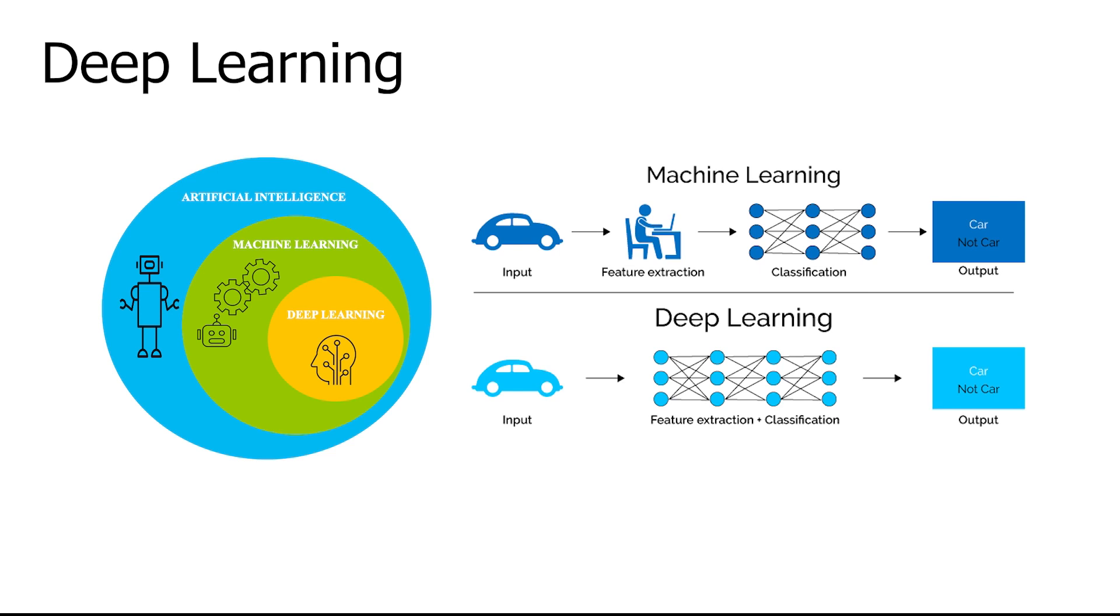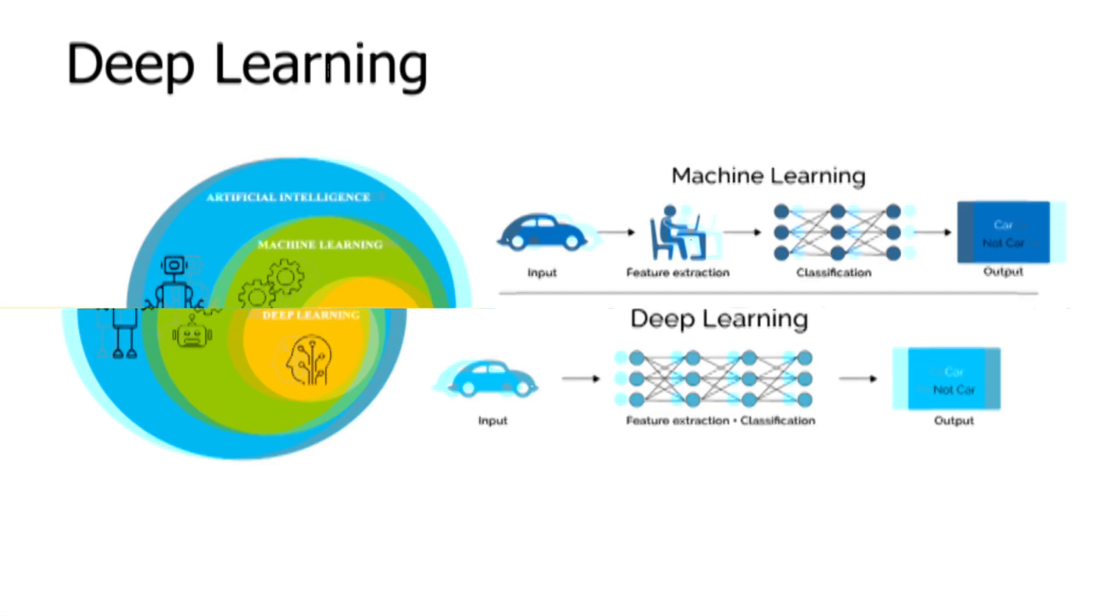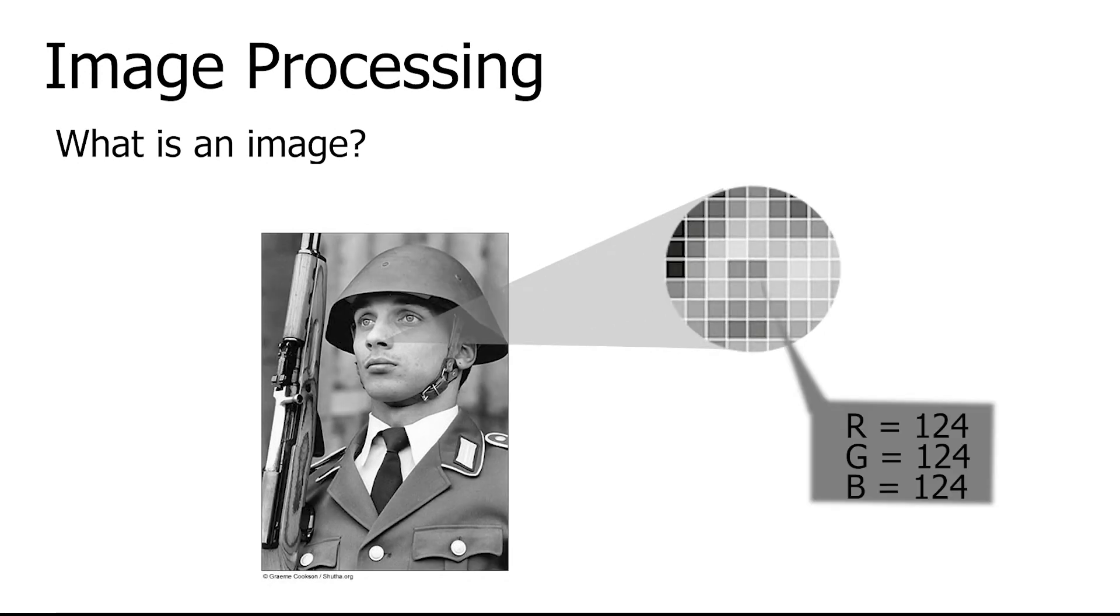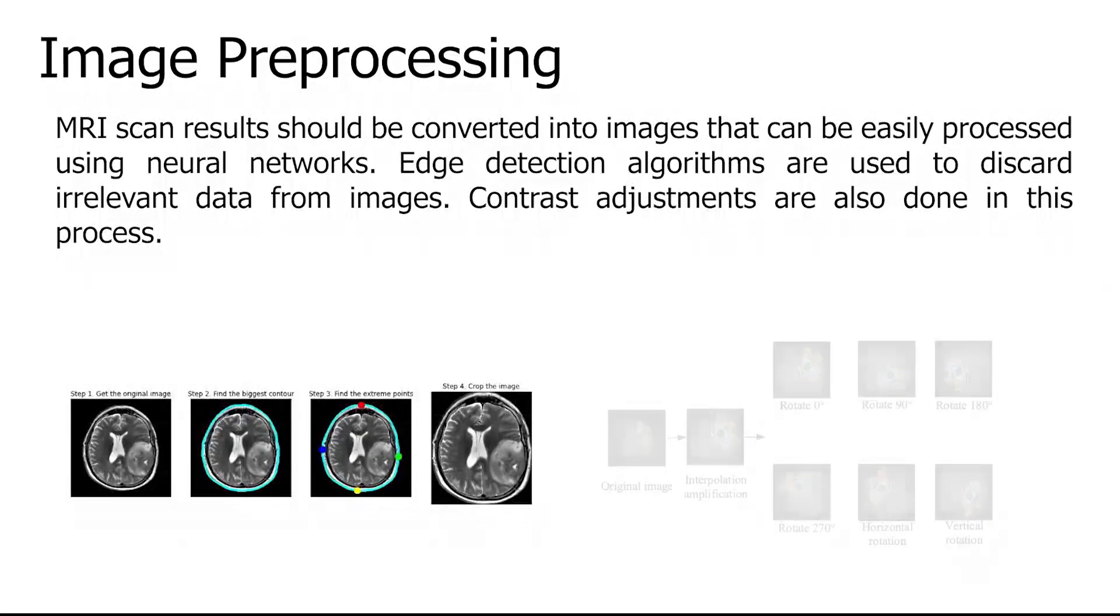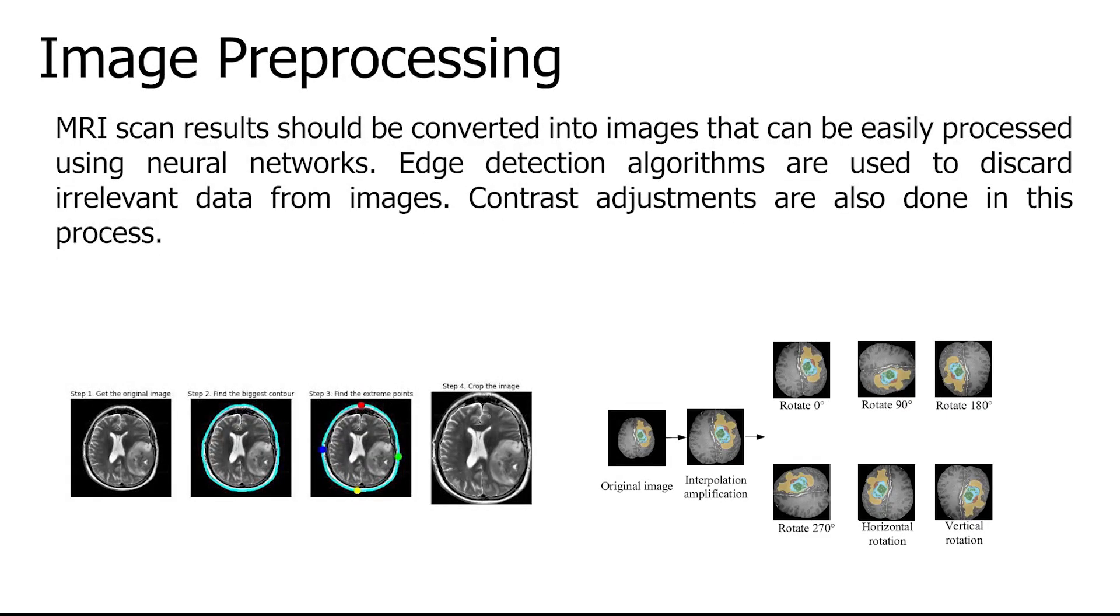Image processing: a pixel is the building block of a digital image. Pixel data is used in deep learning to identify what the picture contains. MRI scans are grayscale images. Image pre-processing: MRI scan results should be converted into images that can be easily processed using neural networks. Edge detection algorithms are used to discard irrelevant data from images. Contrast adjustments are also done in this process.